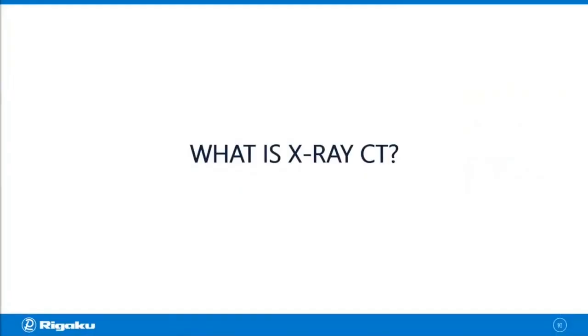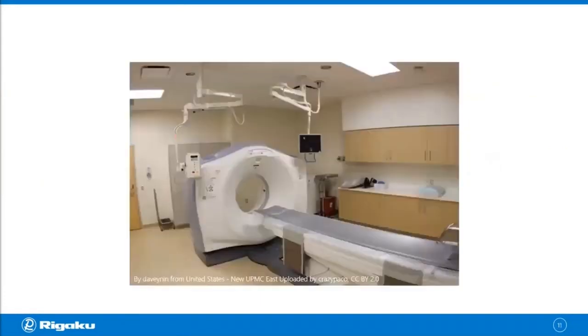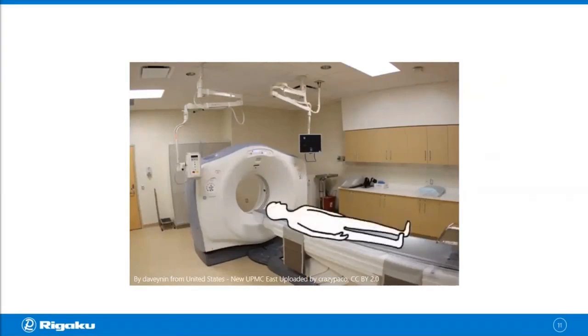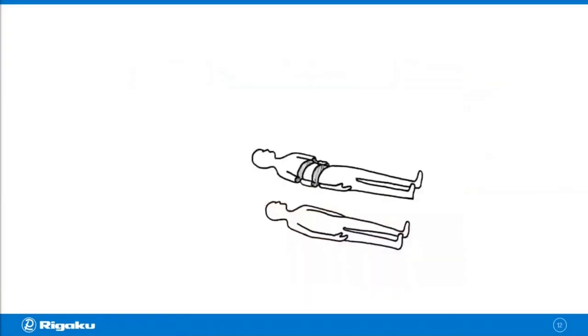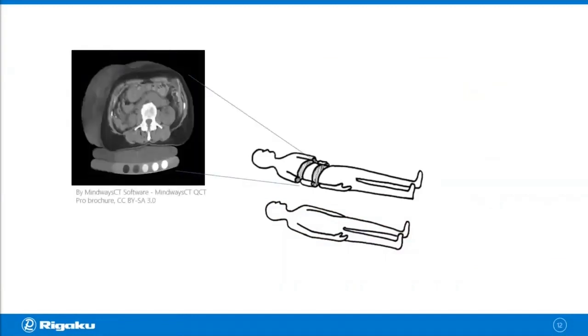What is X-ray CT? A lot of people are probably familiar with this. This is a medical CT scanner, or CAT scan. A patient would lie down on this bed and go through this donut-shaped scanner, and his body gets sliced—not literally, but virtually—and his doctor can look at cross sections of the body. This is how a medical CT scanner is used.